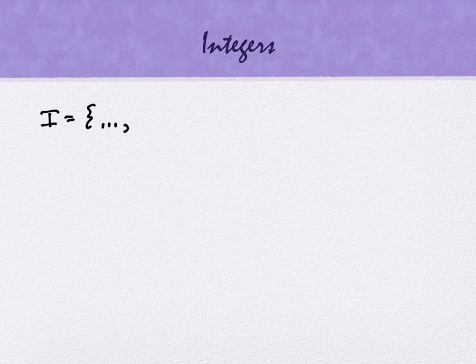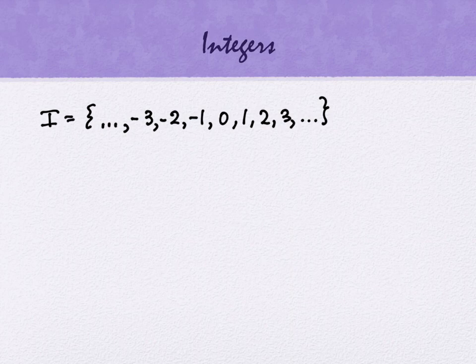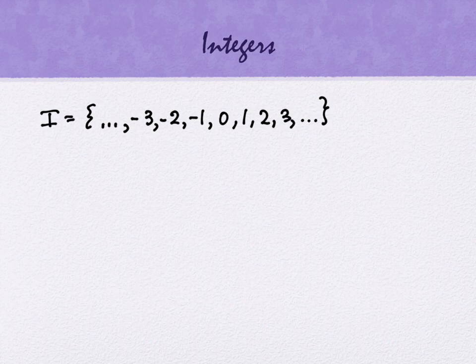So I'm going to put dot dot dot, and I'm going to have negative 3, negative 2, negative 1, 0, 1, 2, 3, and on. Sometimes people describe this as the positive and negative whole numbers, but maybe a better description is that it's the whole numbers and their additive inverses. Additive inverses means the number we would have to add to get back to 0. So negative 3 is the additive inverse of 3 because it's the number I would have to add to 3 to get back to 0.